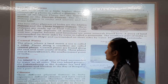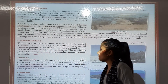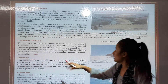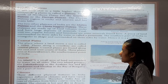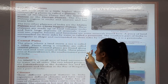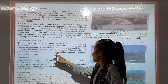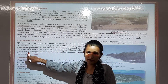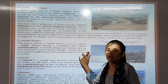We are going to learn about coastal plains. The place where land meets the sea is called a coastal plain. Coastal plains are found along the east and west coasts of India. These plains join at Kanyakumari, the southernmost point of India.